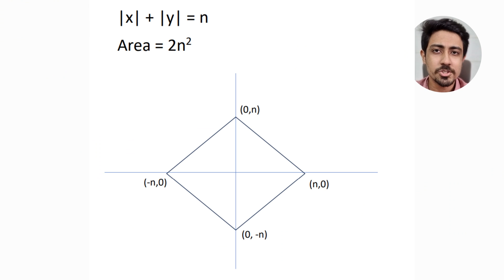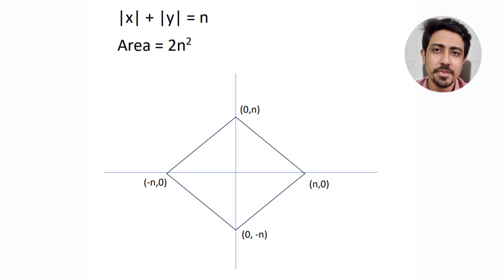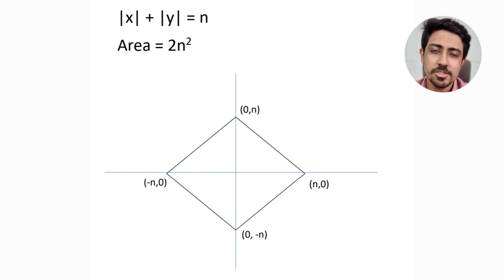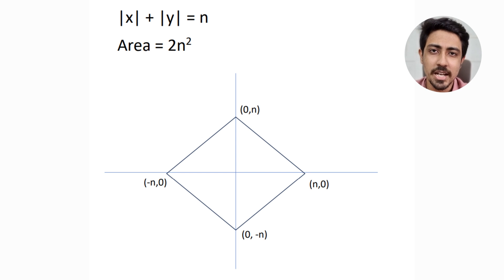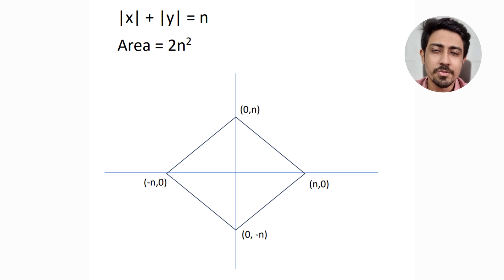Let's deep dive into some graph questions. One shortcut for a question you encounter often is: the area of |x| + |y| = n. The shortcut is that the area will be 2n². Just try to understand the kind of graph that happens with this identity — it forms a diamond shape.